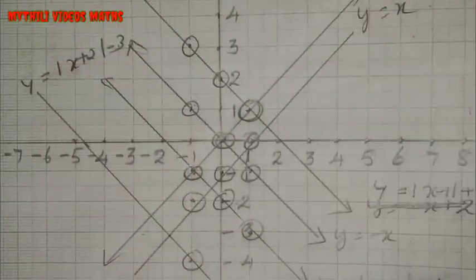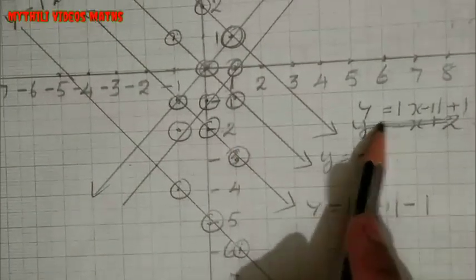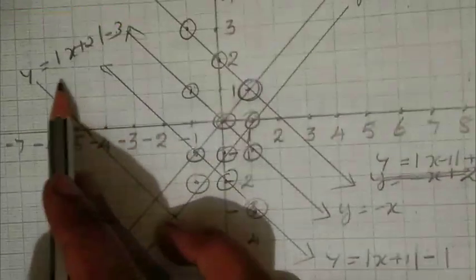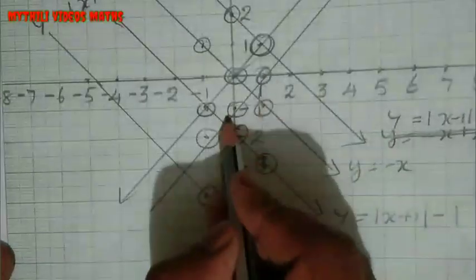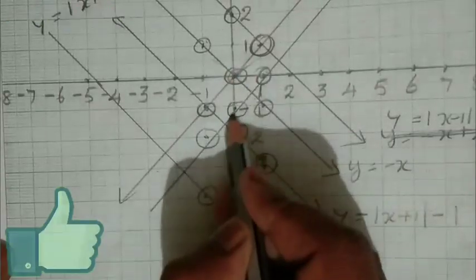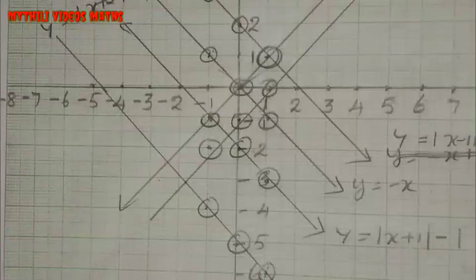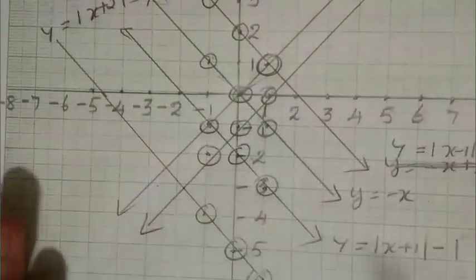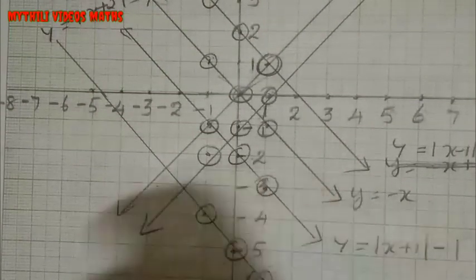So we have drawn y equal to modulus of x plus 1 minus 1, y equal to modulus of x minus 1 plus 1, and y equal to modulus of x plus 2 minus 3. These are the three bends — the V-shaped graphs plotted on the graph sheet. That's all. If you have any doubt, let us know in the comment box. Please subscribe, like, and share. Thank you.